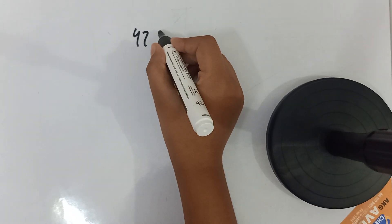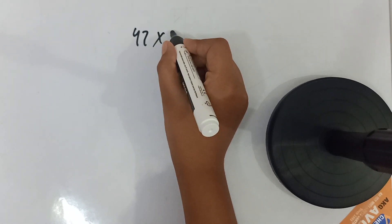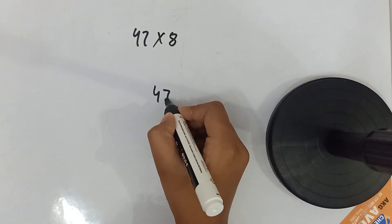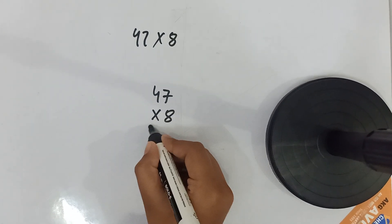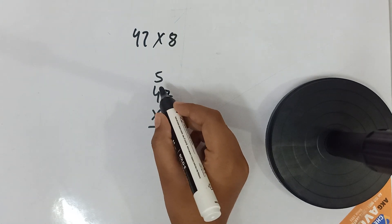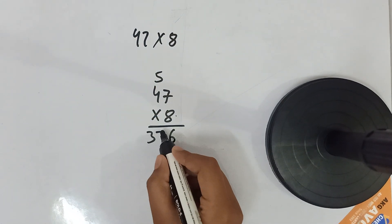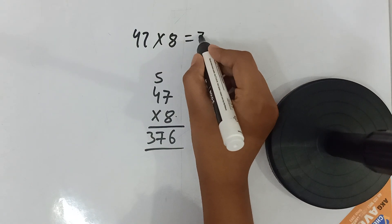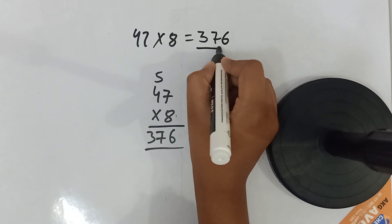Let's take a random number — 47 multiplied by 8. First we will do it with the normal basic method. So 8 sevens are 56, 5 carry over. Then 8 fours are 32 plus 5 is 37. So the answer is 376.